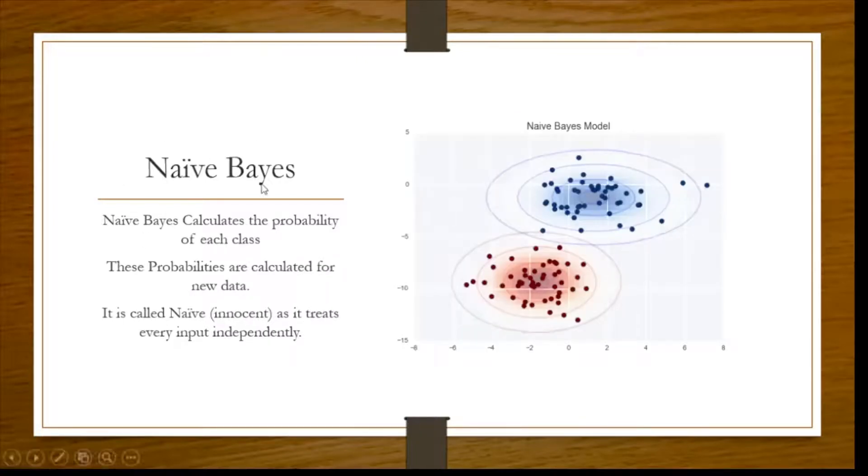The next is Naive Bayes. Now this is again a classification problem. As you can see these are being classified. It works with probability. And it is called naive because it is innocent, as it treats every input independently. Now in real world this is a problem because every input cannot be treated independently. There is some relation between two inputs. And it is also computationally very costly. So what happens is Naive Bayes calculates probability of each class. And probabilities for the new data are also calculated. And if it falls nearer to some already defined probability, it will be classified in that class.